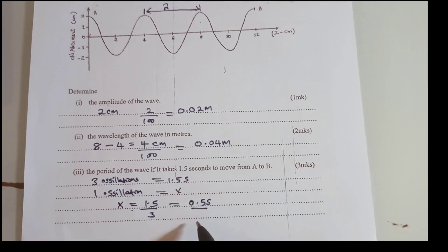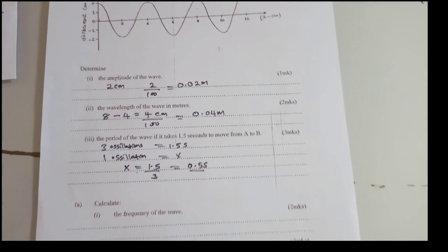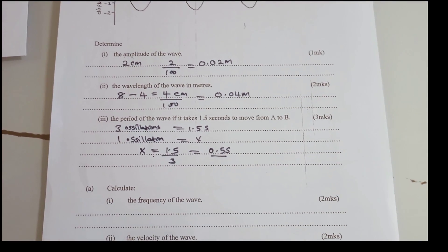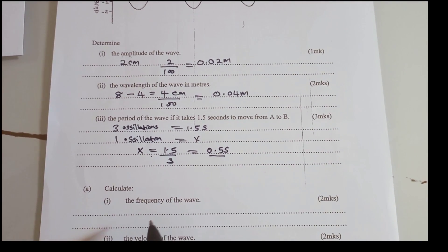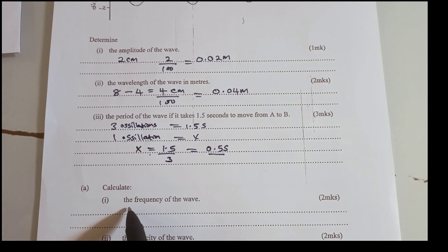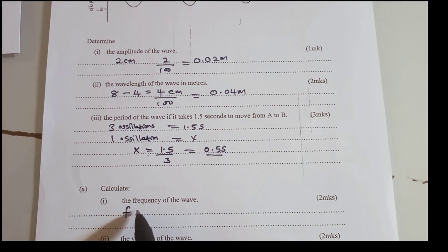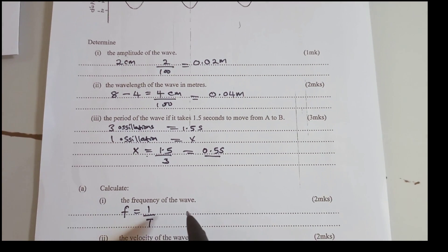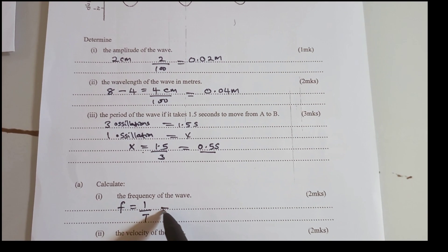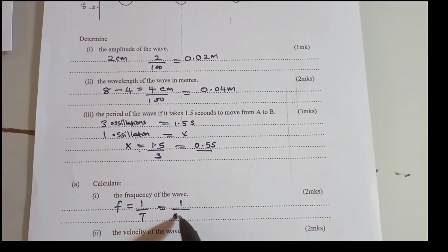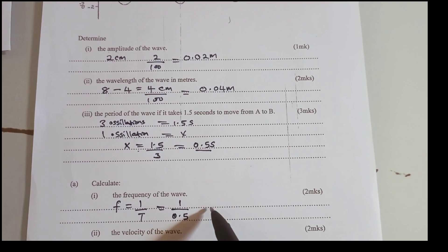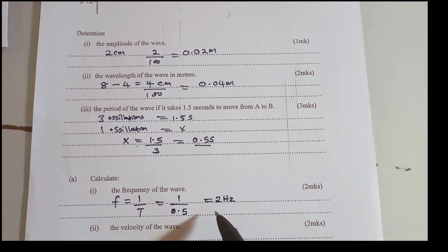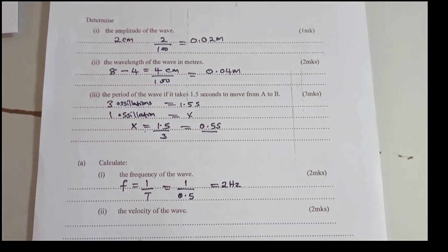Calculate the frequency of the wave. We talked about frequency. Frequency and the period are related such that F equals 1 over T, or 1 over period. Therefore, this is the same as 1 over 0.5 seconds. And we get this to be 2 hertz.